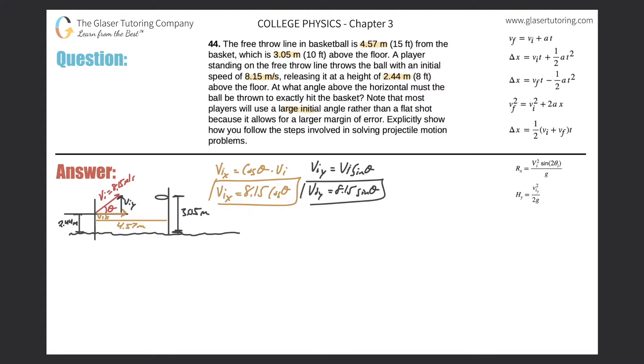Let's do the same thing for the Y. So we have the initial velocity in the Y direction being equal to the initial velocity multiplied by now the sine of theta. So the initial velocity in the Y direction will be equal to 8.15 sine of theta.